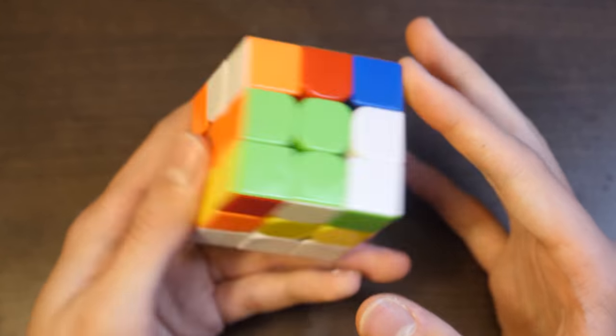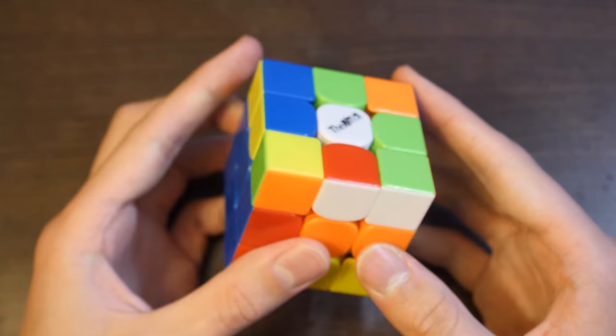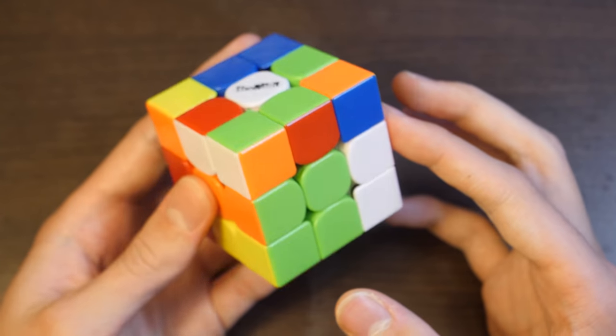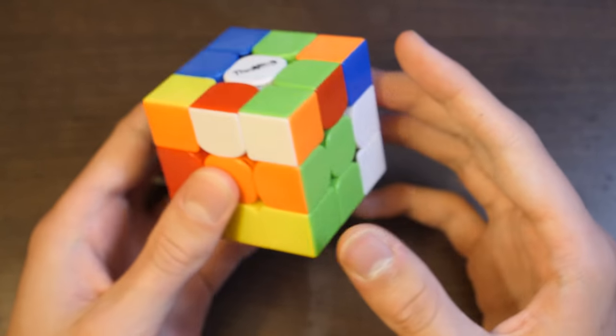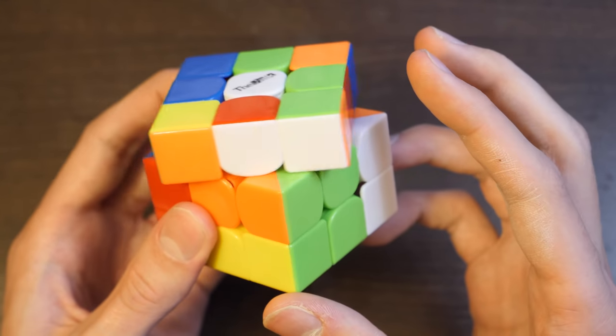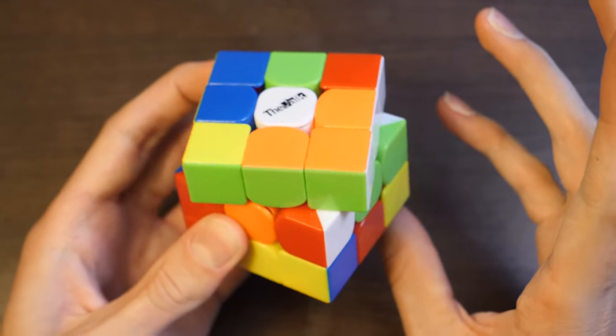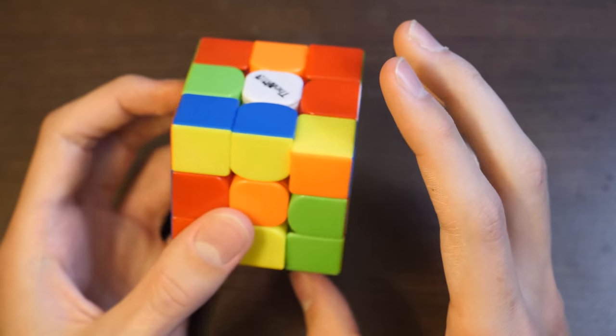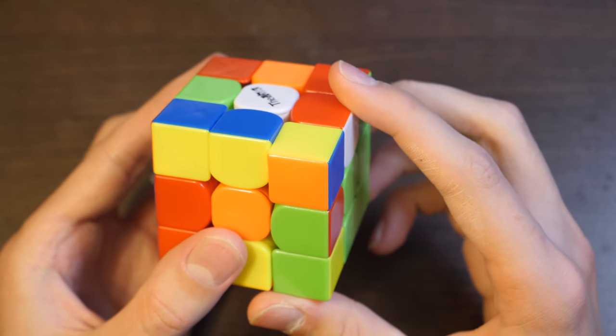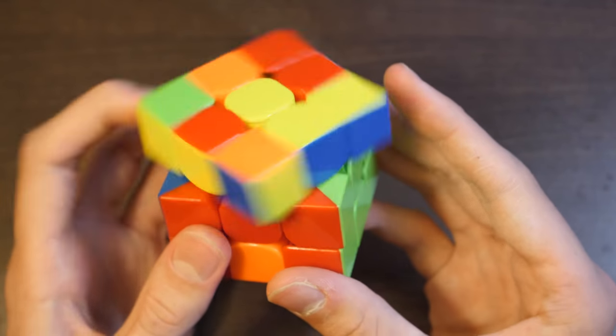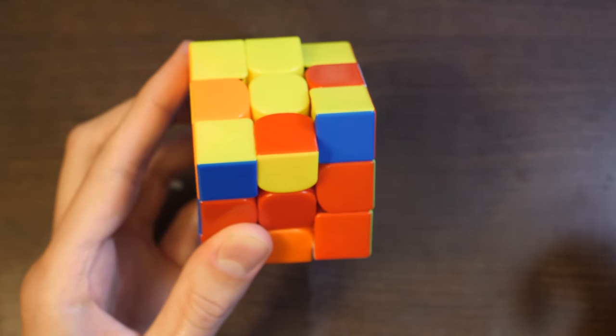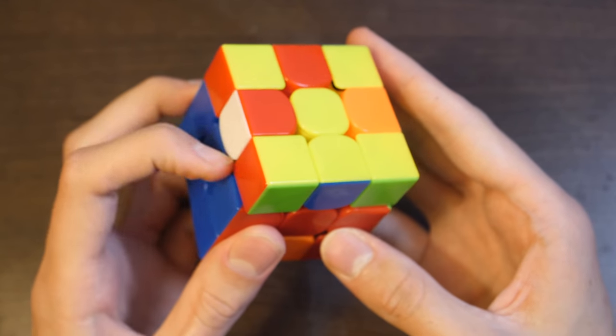And here he decides to do something pretty interesting. He solves these two instead of these two, which makes sense, always solving in the back. And he could have probably canceled here, but he did it like this. He has CMLL and then EO.